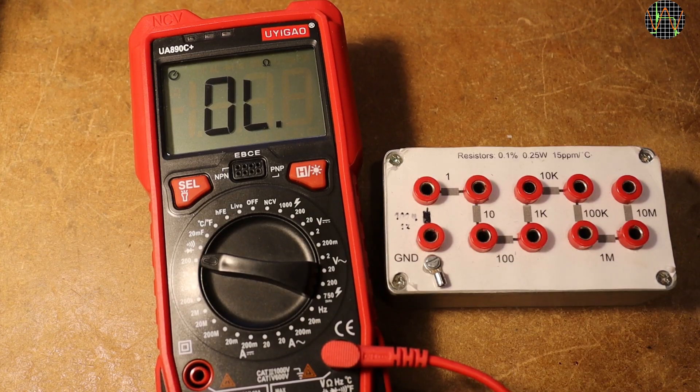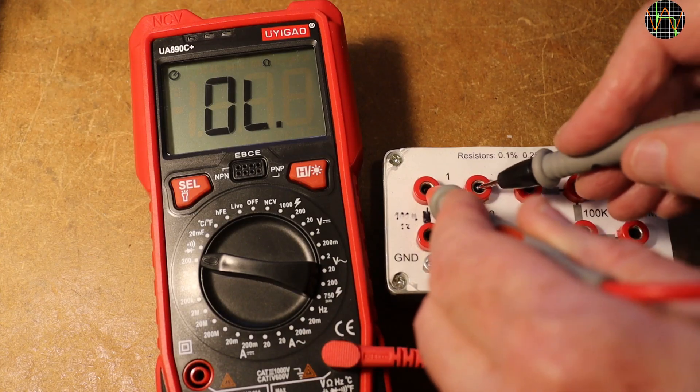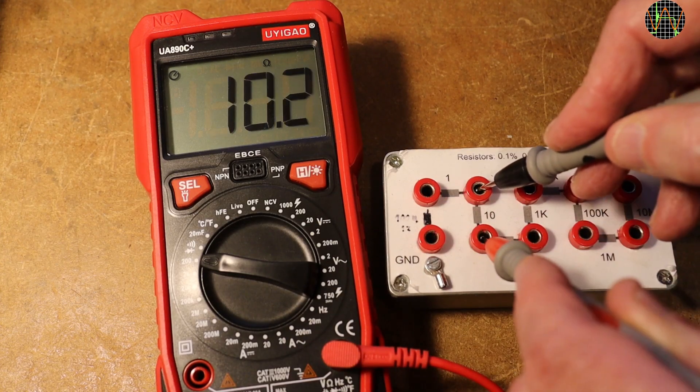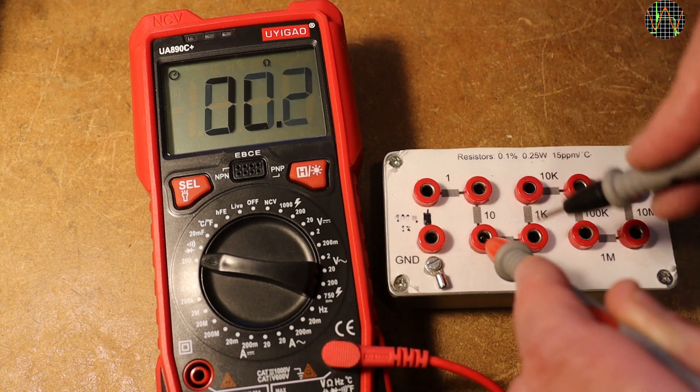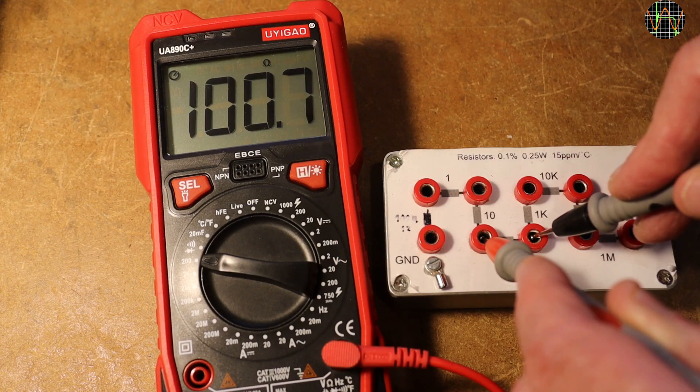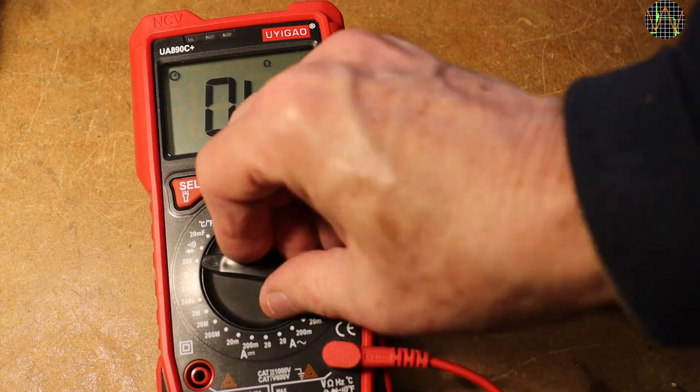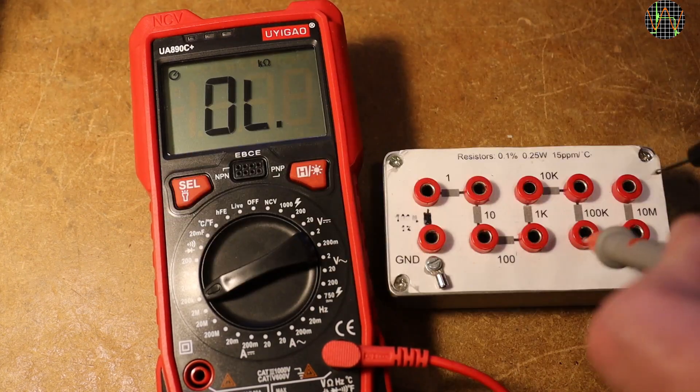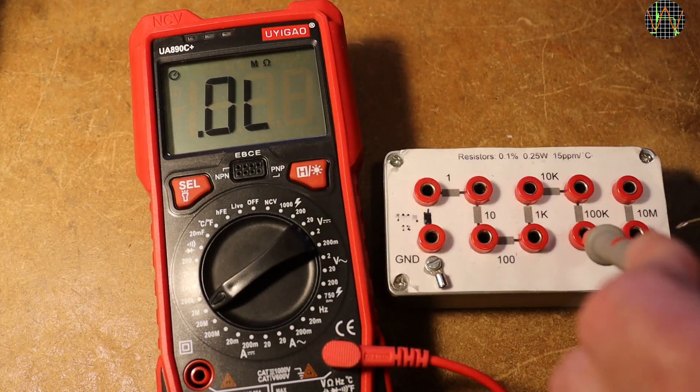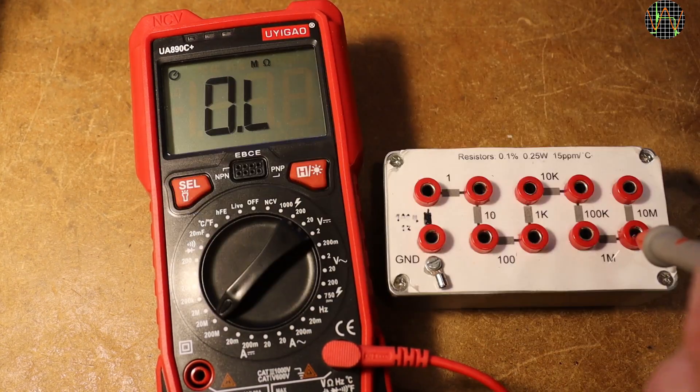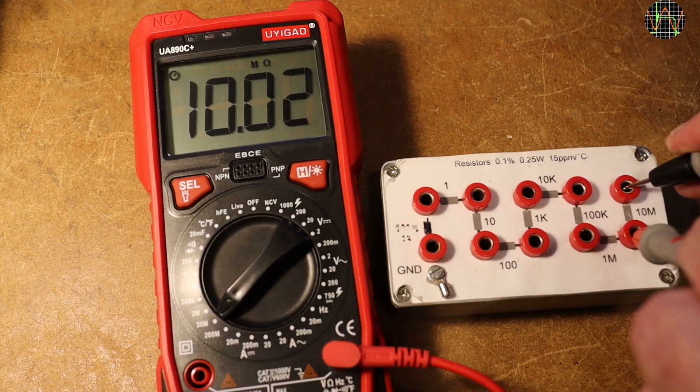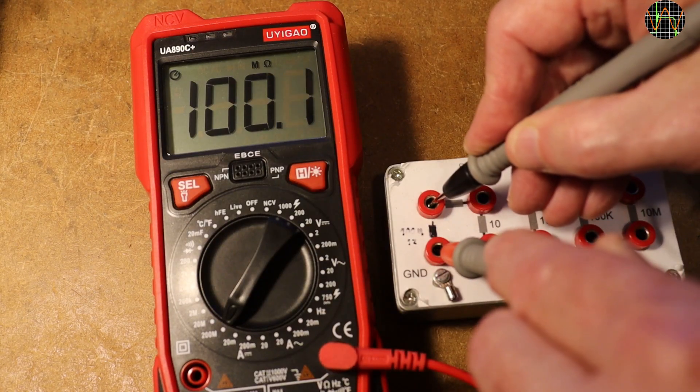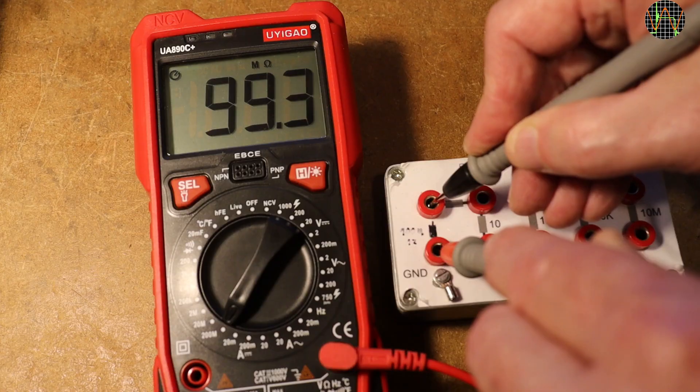Ohms now. The meter has no REL function for ohms. 1 ohm spot on. 10 ohms ok. 100 ohms still in spec. The other resistances are all in spec. 10 meg takes some time to settle. And 100 meg even longer. The maximum value the meter can measure is 200 meg, which is impressive.